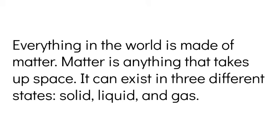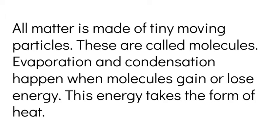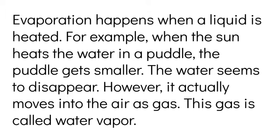Everything in the world is made of matter. Matter is anything that takes up space. It can exist in three different states: solid, liquid, and gas. Matter can also change from one state to another. It does this through different processes. Two examples are evaporation and condensation. In evaporation, matter changes from a liquid to a gas. In condensation, matter changes from a gas to a liquid. All matter is made of tiny moving particles. These are called molecules. Evaporation and condensation happen when molecules gain or lose energy. This energy takes the form of heat. Evaporation happens when a liquid is heated. For example, when the sun heats the water in a puddle, the puddle gets smaller. The water seems to disappear.